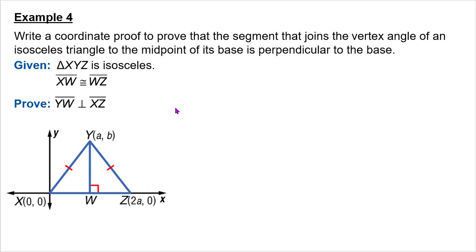Example 4. Write a coordinate proof to prove that the segment that joins the vertex angle of an isosceles triangle to the midpoint of its base is perpendicular to the base. I need to prove, I'm given that this triangle is isosceles. They give me XW equals WZ. And I want to prove that YW is perpendicular. So again, we're going to use slopes. We're going to use the idea of slopes here. I could prove it's a right angle, but that's going to be really complicated.